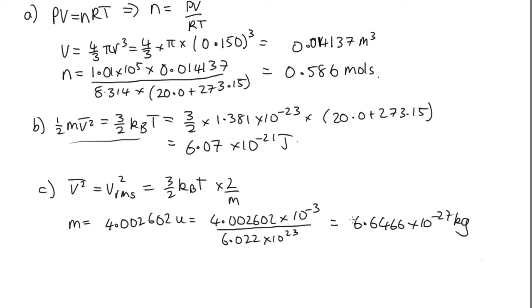And so we can now put this number into the equation here. And so we've got vRMS squared is equal to 3 over 2 kB T, which is the 6.07 times 10 to the minus 21 that we calculated in part B, times 2 divided by 6.6466 times 10 to the minus 27. This is equal to 1,826,488.